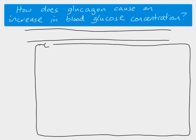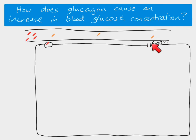Here's a very big liver cell. The liver cell has a glucagon receptor, and here you can see a molecule of glucagon binding to the receptor. Over here is a GLUT2 protein — this is specific to liver cells. Muscle cells do not respond to glucagon in the same way; they don't have the glucagon receptor.